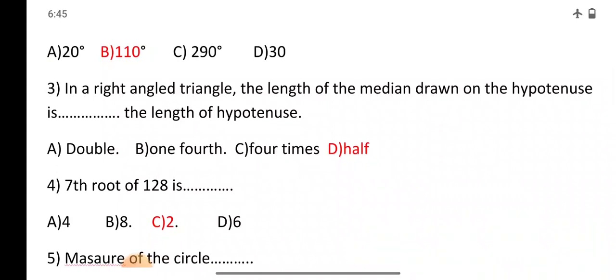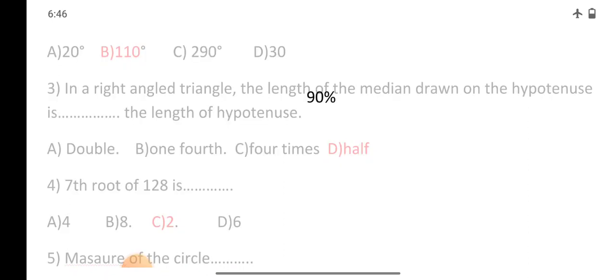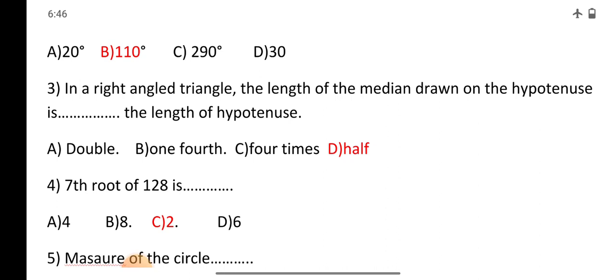Sub-question number 3: In a right-angle triangle, the length of the median drawn on the hypotenuse is how much of the length of the hypotenuse? The correct option is D: half. Half is the correct answer.